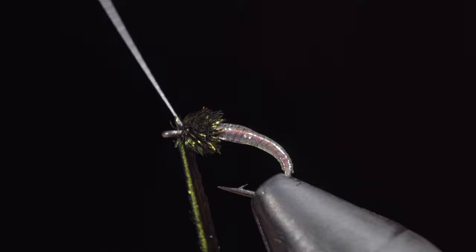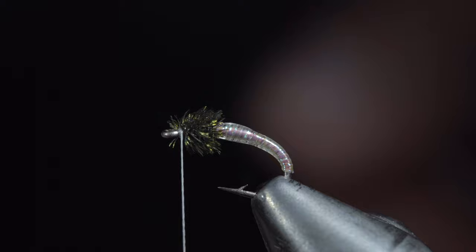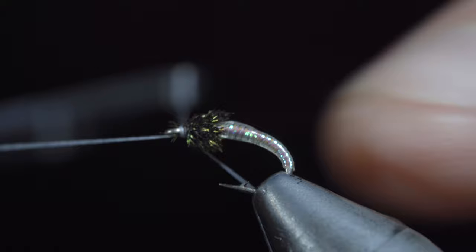Secure by taking thread wraps both in front, as well as behind, and snipping the excess free. Whip finish to hold everything in place. This is a simple fly that can be tied in small sizes.